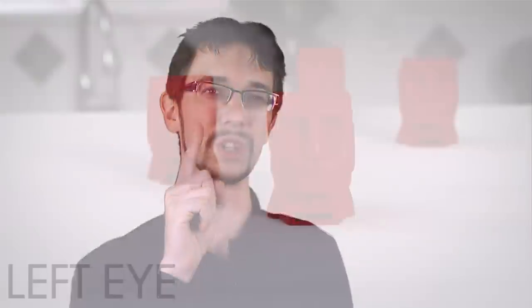First, you need to understand how the brain is able to see 3D objects in the first place. Because your two eyes have some distance between them, each eye sees a slightly different view of the world.